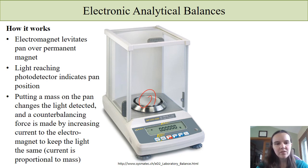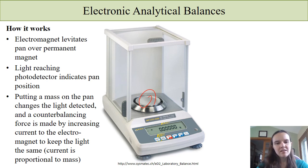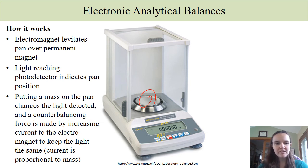If you put a mass on the pan — something that you're weighing — it's going to change the amount of light that's detected, and then the balance needs to counterbalance that by increasing the amount of current to the electromagnet. That current will be increased until you get the light back to the same position it had been before, and the amount of current required is going to be proportional to the mass.